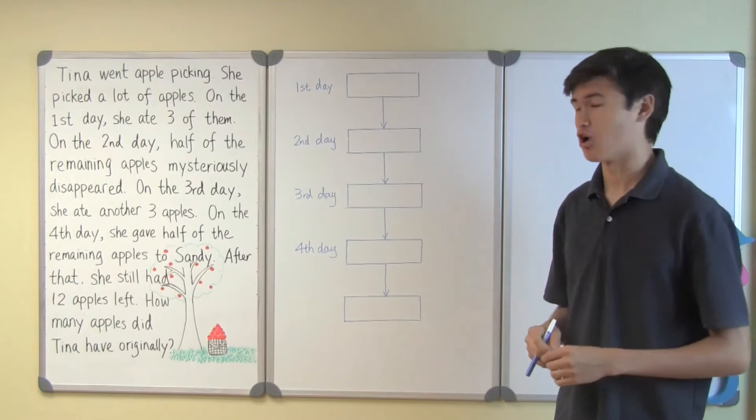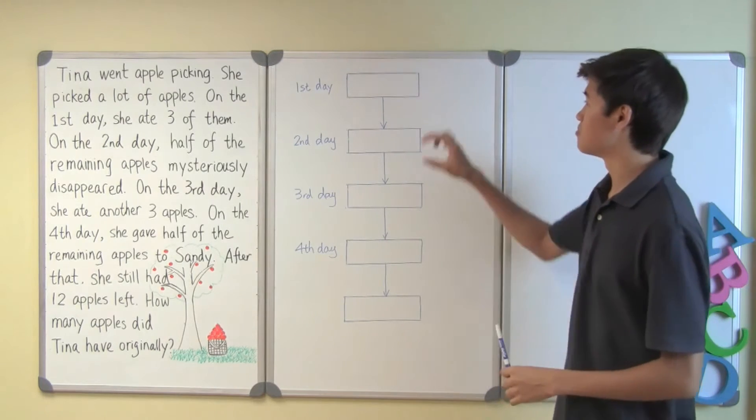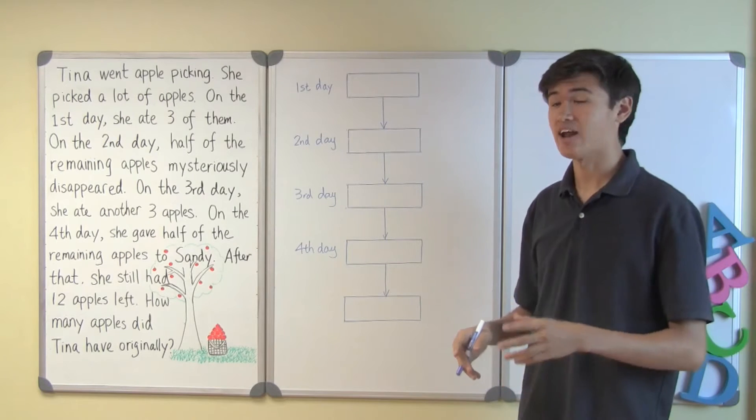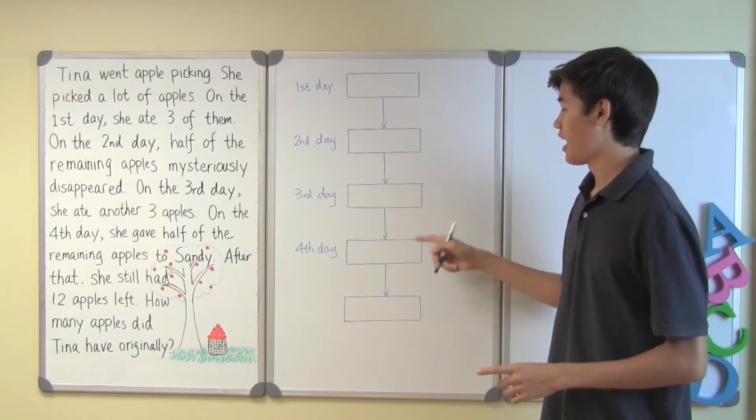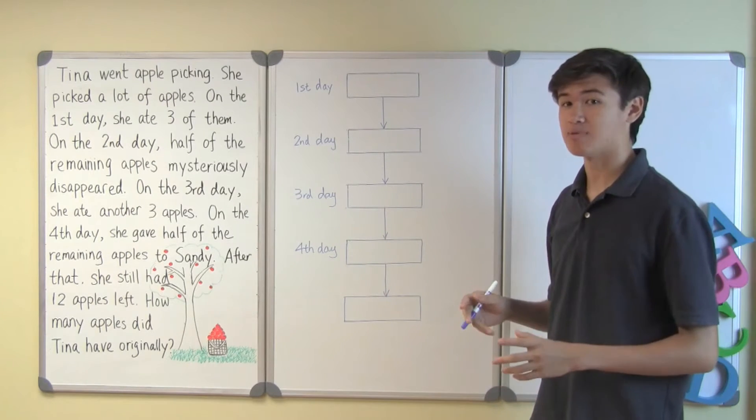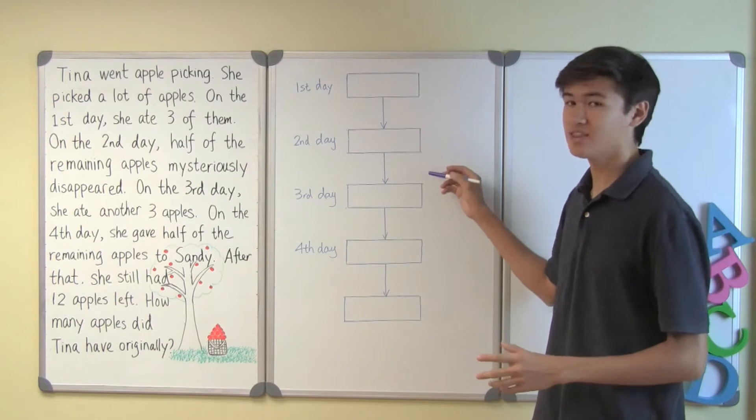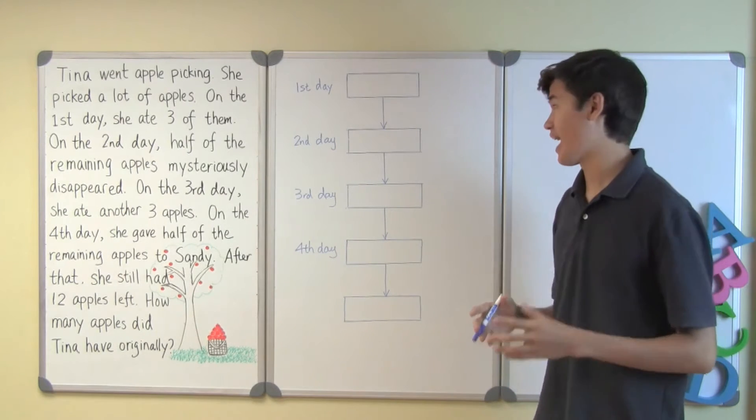Let's begin with a flow chart. On this flow chart we will be using boxes to represent how many apples Tina had on each day and we'll be using arrows to represent the changes between those days and the number of apples that Tina had.